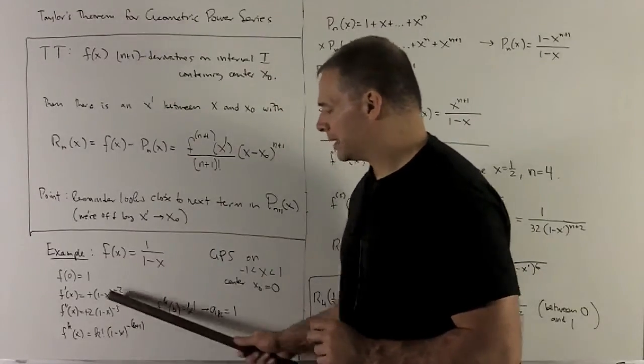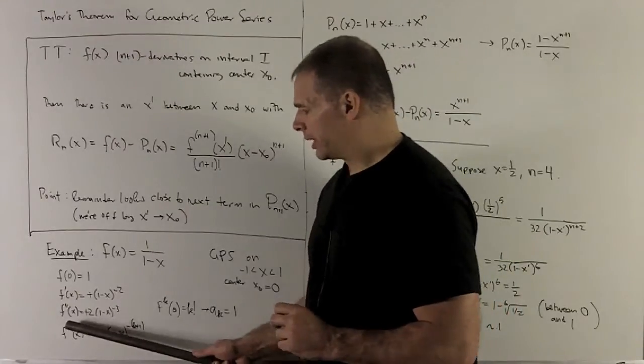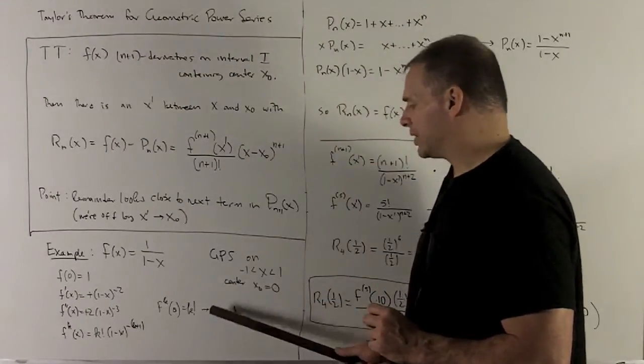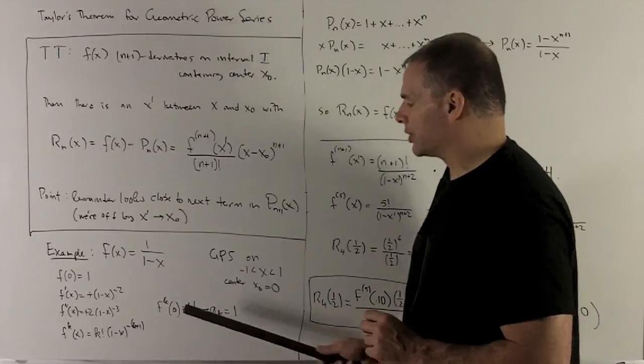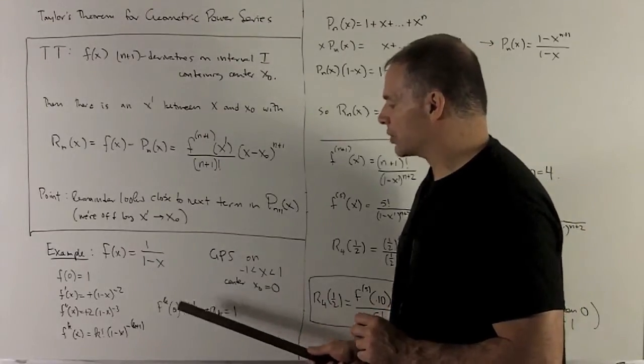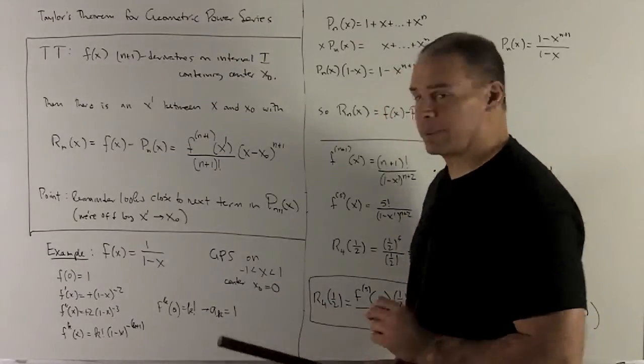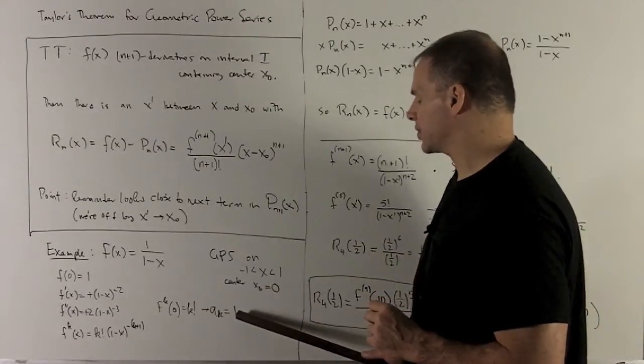If I want my Taylor coefficient that goes with k, that's going to be a sub k equal to 1 because the kth derivative evaluated at 0 is going to be k factorial. To get a sub k divided by k factorial, so I'm left with this.